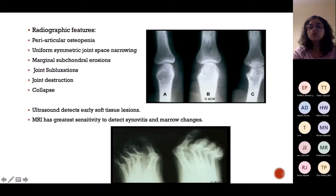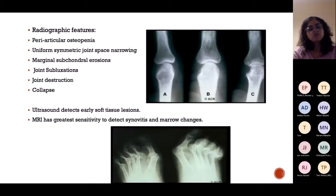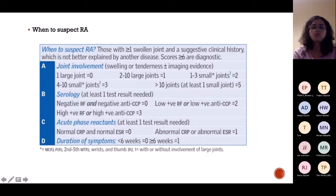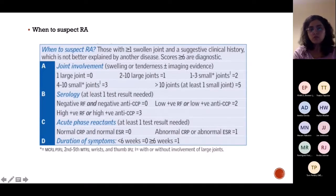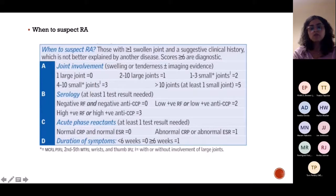Radiological features of RA show uniformly decreased joint space — unlike osteoarthritis where it's not uniform. There can also be joint collapse and destruction due to synovial inflammation and cartilage destruction. Ultrasound and MRI can also be done. Diagnostic criteria for RA from OHCM: if there's more than one swollen joint and a score of more than six, it is diagnostic. Scoring includes joint involvement, serology — RF and anti-CCP — acute phase reactants — ESR and CRP — and duration of symptoms.